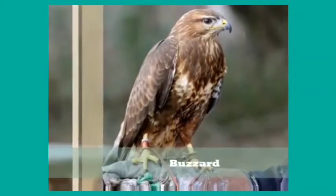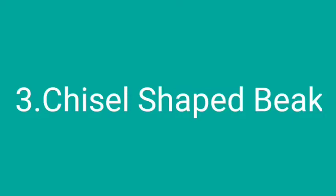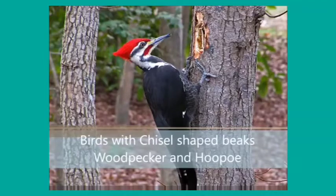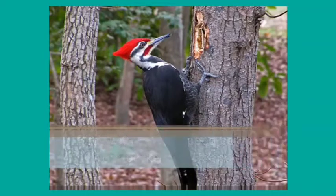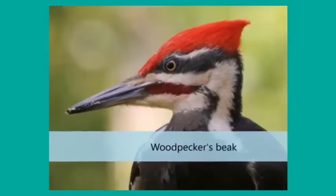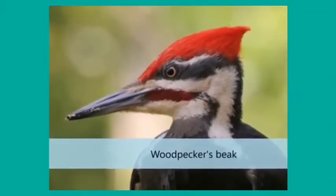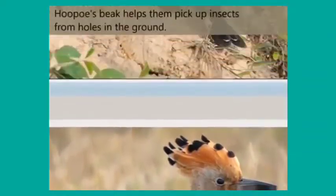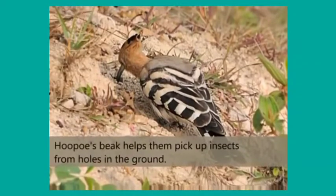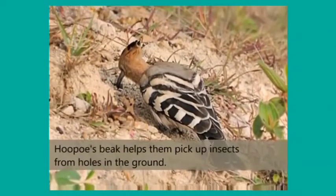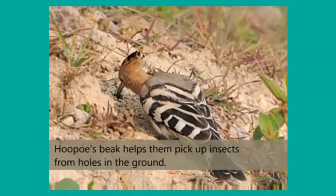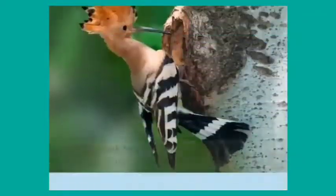The third type is the chisel-shaped beak. Birds like the woodpecker have a long and chisel-shaped beak. With the help of this beak, they will drill into the tree or wood — meaning make holes in the trees — and inside the trees they find insects. By drilling with this chisel-shaped beak, they catch those insects inside the wood and eat them.